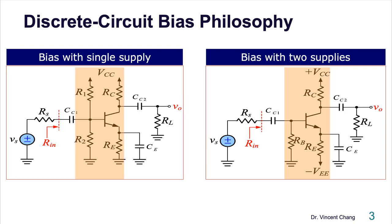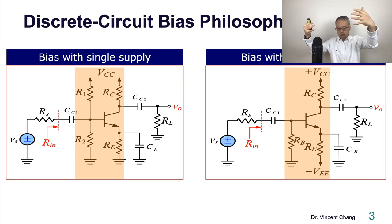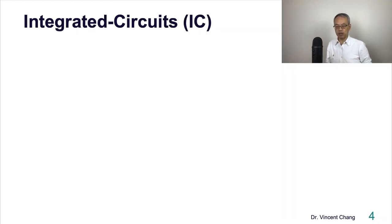Other than large value or moderate value resistors, there are two coupling capacitors. CC1 and CC2 are coupling capacitors to couple in the signal and couple out. And also the big emitter bypass. So coupling capacitor and bypass capacitor. In reality, the capacitor value as I just mentioned is around microfarad order of magnitude. Here's the discrete circuit bias philosophy.